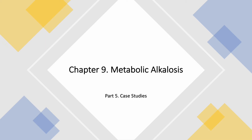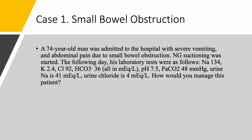This is the last part, and today we are going to do some case studies in metabolic alkalosis. Case number one is small bowel obstruction. A 74-year-old man was admitted to the hospital with severe vomiting and abdominal pain due to small bowel obstruction. NG suctioning was started the next day. His labs were as follows: sodium is a little bit low at 134, potassium remarkably low at 2.4, chloride is low at 92, bicarbonate is high at 36, pH is elevated at 7.5, PaCO2 is 48. Urine sodium is elevated at 41, while urine chloride is 4. How would you manage this patient?